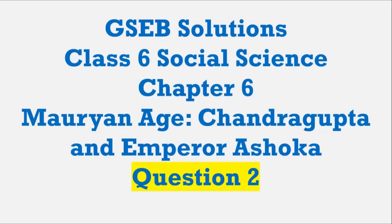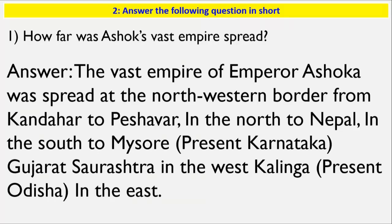Today we will see a video related to GACB solution class 6 social science chapter 6: Mauryan Age — Chandragupta and Emperor Ashoka. We will cover Question 2. Question 1 of this chapter has already been discussed in a previous video — if you want, you can subscribe to the channel and go through those videos.